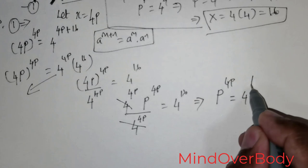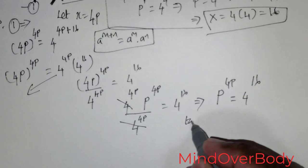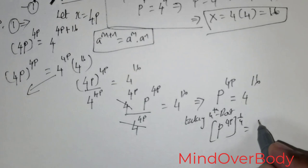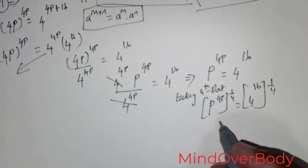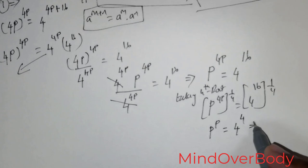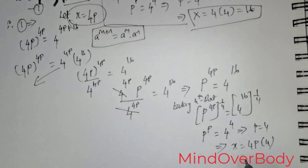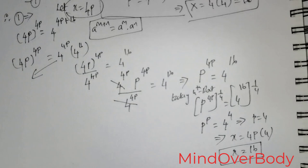Taking the fourth root of both sides: p raised to the power 4p, raised to the power one-quarter, equals 4 raised to the power 16, raised to the power one-quarter. This gives p raised to the power p equals 4 raised to the power 4, which means p equals 4. Since x equals 4p, x equals 4 times 4 which equals 16.